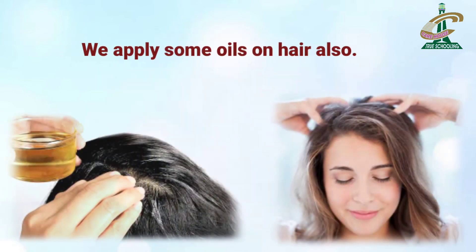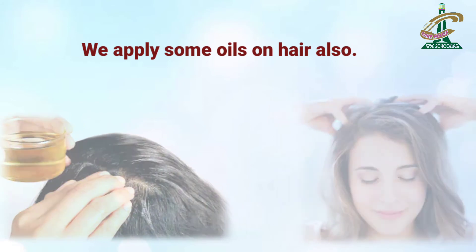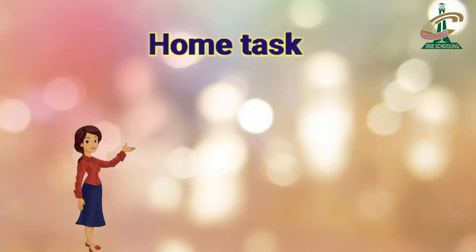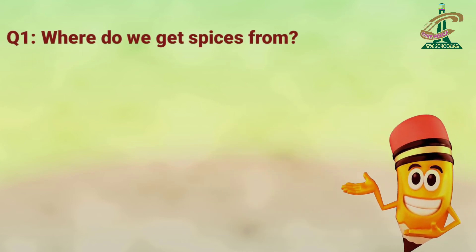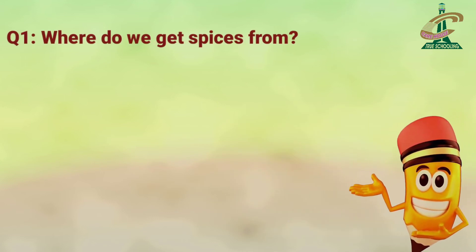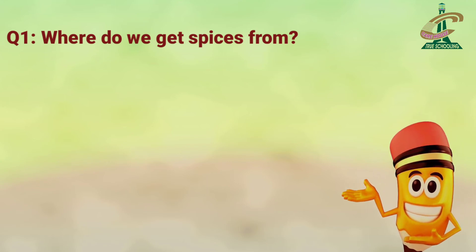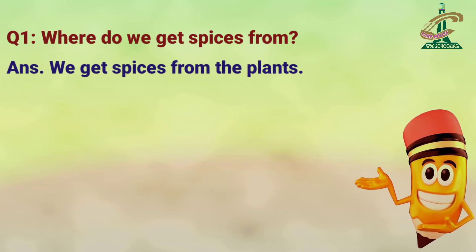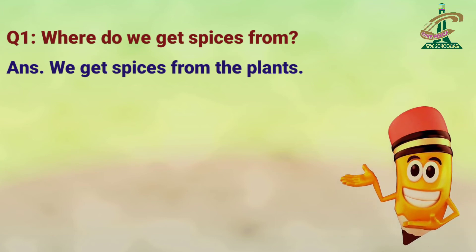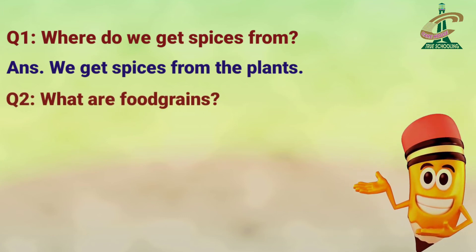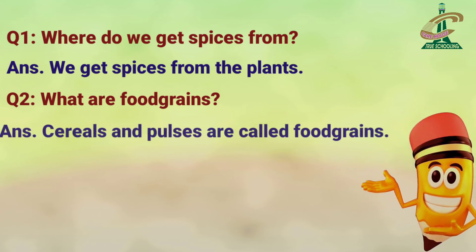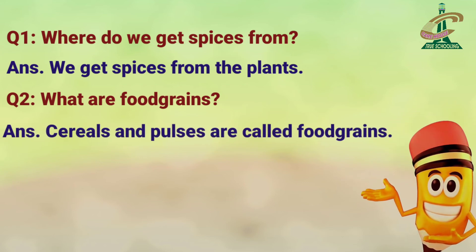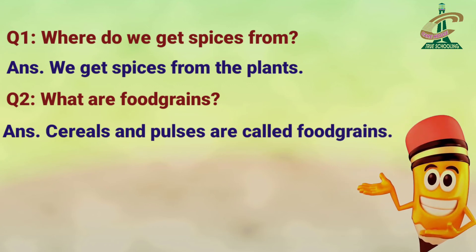Now students, it's time for your home task. I'm assigning you two questions to memorize. Question number one: Where do we get spices from? Answer: We get spices from plants. Question number two: What are food grains? Answer: Cereals and pulses are called food grains.